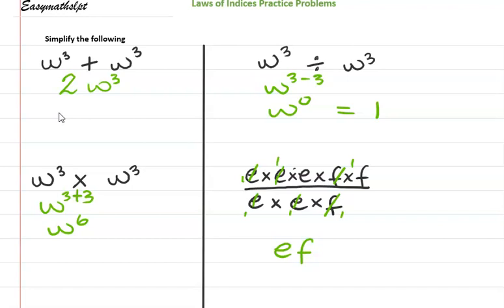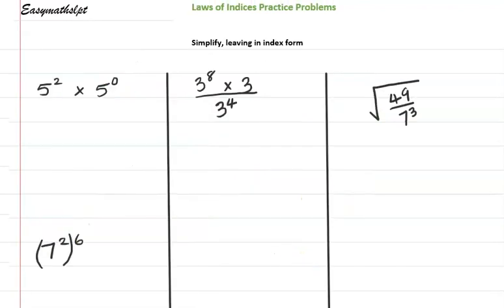In this one: 5 to the second power multiplied by 5 to the zero power. Anything raised to the zero power is one, so 5² × 1 simplifies to 5 squared. If we were asked to evaluate it, 5 squared is 25, but since it asks us to leave our answer in index form we do not need to write that.